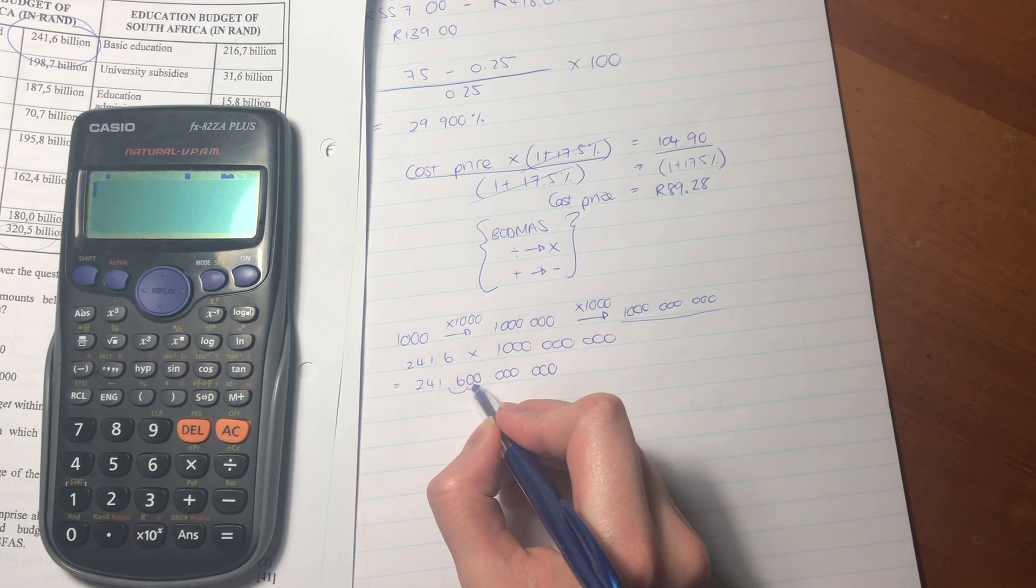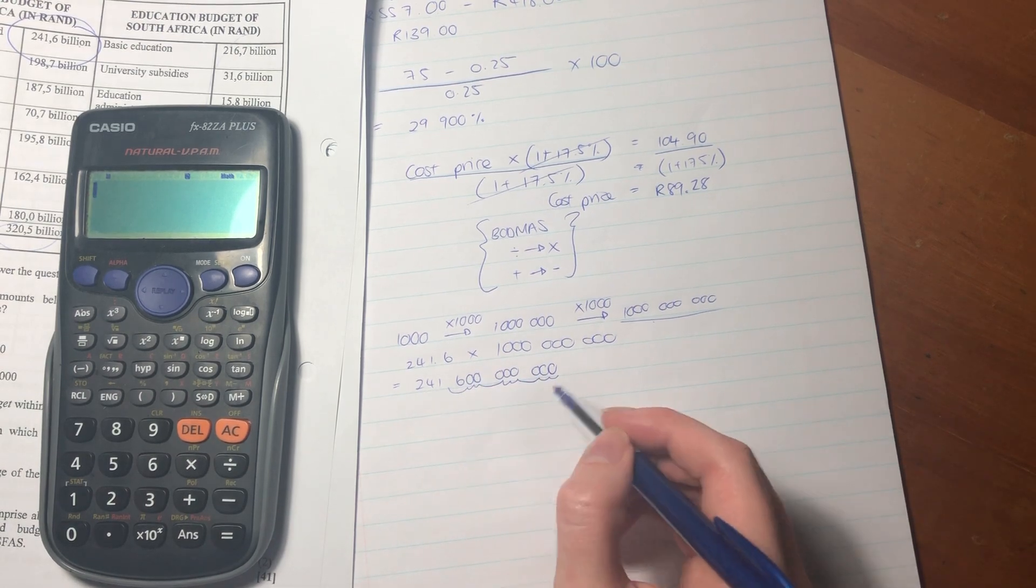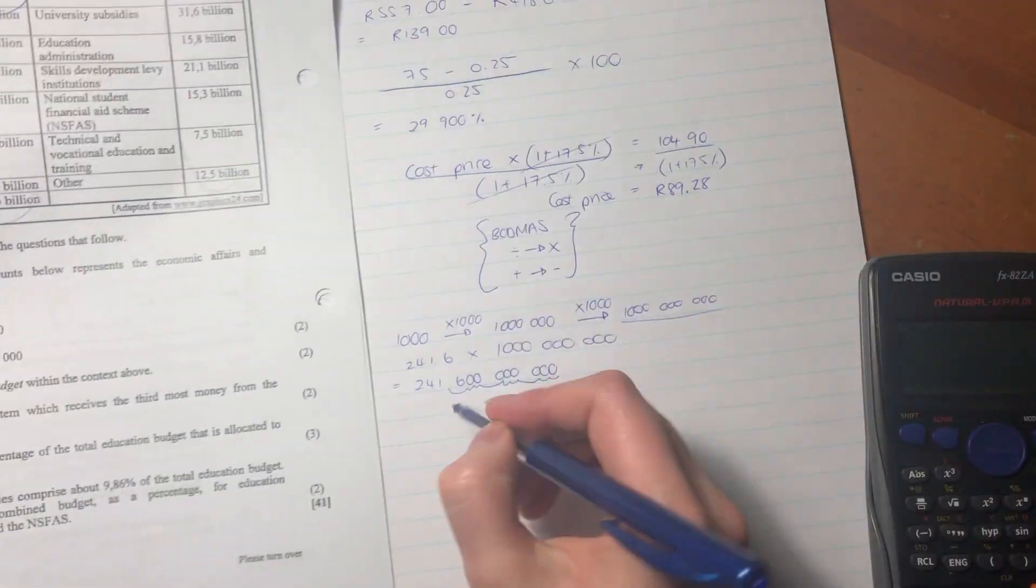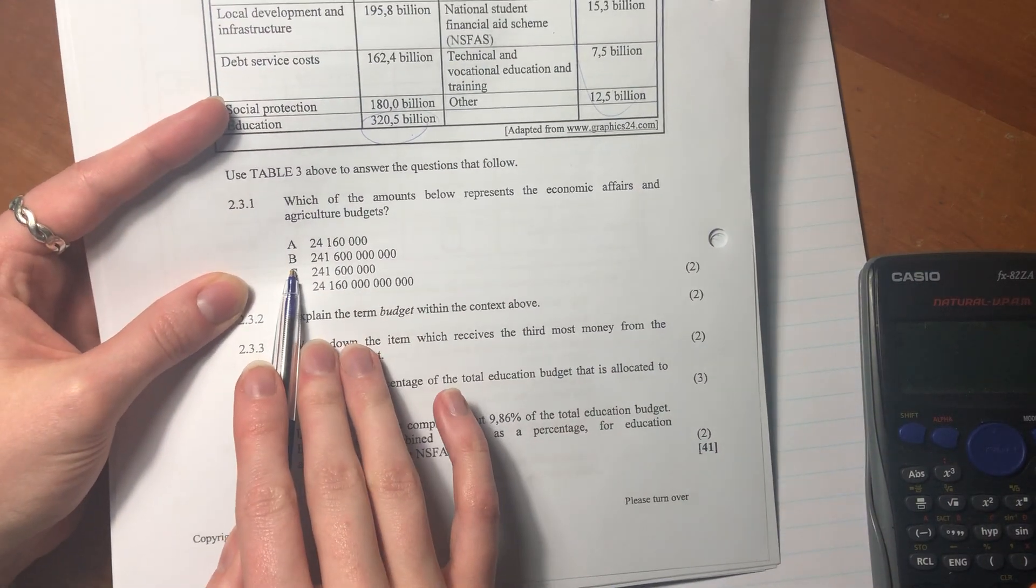So you kind of actually just have to move the decimal place nine times. So it was here originally, so one, two, three, four, five, six, seven, eight, nine. You see that? So that's what it's going to be. So if we look at it over here, it will be B. My boy B, that's what it's going to be.